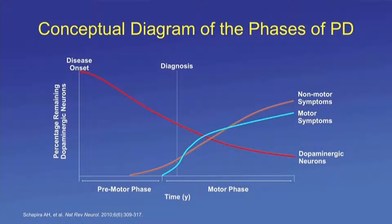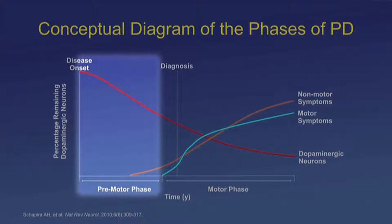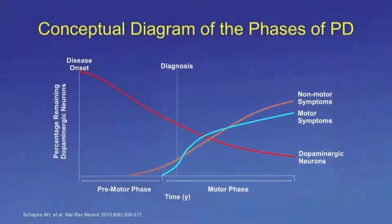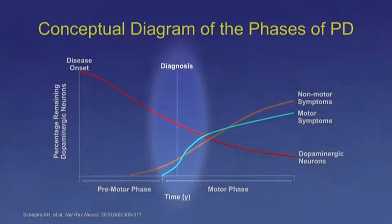This is a conceptual diagram of the phases of Parkinson's disease by Shapira. It has two phases, though recently there has been consideration for three. The vertical axis shows the percentage of remaining dopamine neurons — the red line — starting on the left. The horizontal axis shows the premotor phase on the left and the motor phase on the right, with the diagnosis line in the center. The red line shows an ever-decreasing number of dopamine neurons as the disease progresses.